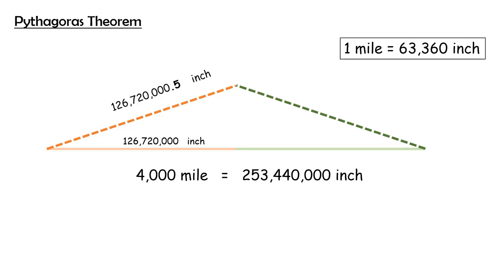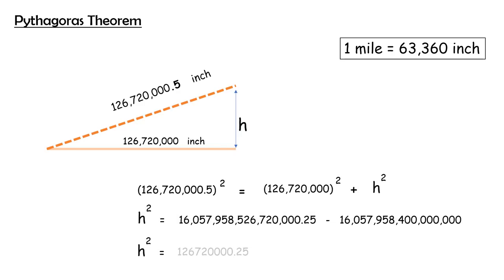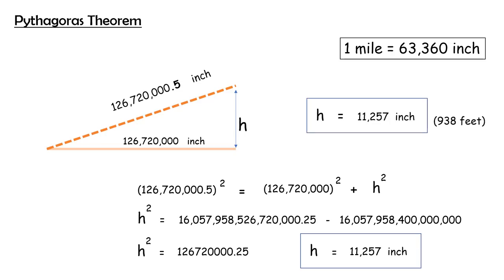Now we know the values of hypotenuse and the base. We can calculate the height using the Pythagoras theorem. And we get the height as 11,257 inches, or 938 feet. And that's why it would be impossible for the pedestrian to touch the new center of the handrail.